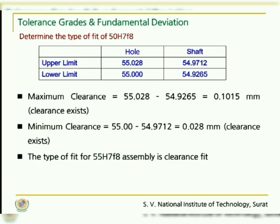This is the summary of the upper and lower limits of the hole and shaft. Maximum clearance occurs when the upper limit of the hole and lower limit of the shaft are considered, giving 0.1015 mm — confirming clearance exists. Minimum clearance is calculated by comparing the lower limit of the hole and the upper limit of the shaft, giving 0.028 mm — again clearance exists. Thus, the type of fit for 55H7F8 is a clearance fit.